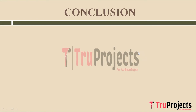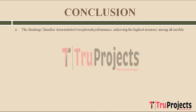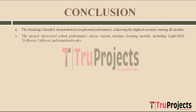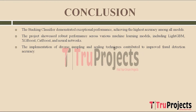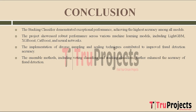In conclusion, the stacking classifier stood out by achieving the highest accuracy among all models, demonstrating remarkable performance in fraud detection. The project showcased robust performance across a variety of models including LightGBM, XGBoost, CatBoost, and neural networks, highlighting its adaptability. The utilization of diverse sampling and scaling techniques significantly contributed to improved fraud detection accuracy. Ensemble methods such as voting classifiers and stacking classifiers further elevated accuracy.